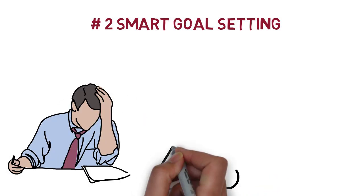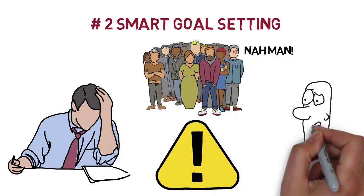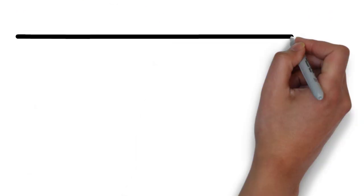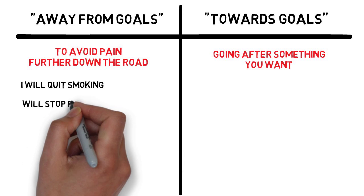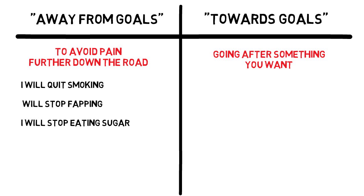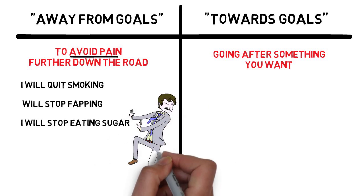And if you have a boring life then what you should also be doing is setting goals and going after them. This is so important yet most people never do this. If you already have goals then also take a look at them to make sure you have a good ratio of away from goals versus towards goals. You see goals like I will quit smoking or I will stop fapping or I will stop eating sugar. Those are all away from goals. You are giving up things that are pleasurable just to stay away from pain further down the road. And that's not really motivating.